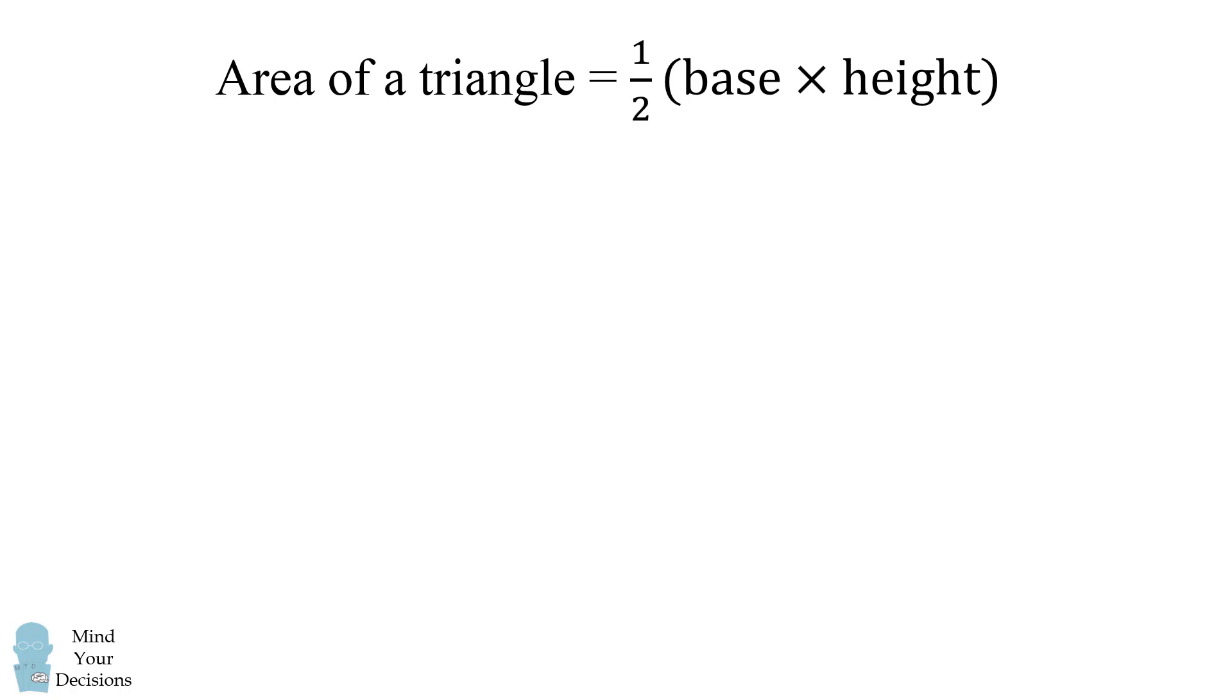So a key principle in this problem is the formula for the area of a triangle, which is equal to one half the base times the height. So if you have a right triangle where one of its legs is the base and the other leg is the height, the area of this triangle is one half times the base times the height.